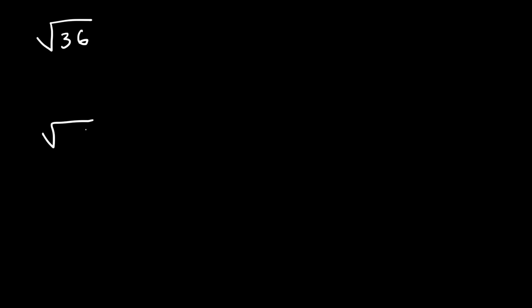In this lesson, we're going to focus on simplifying radicals. So let's say if we have the square root of 36, the square root of negative 49, negative square root of 64, and negative square root of negative 25. How would you simplify these four radicals?